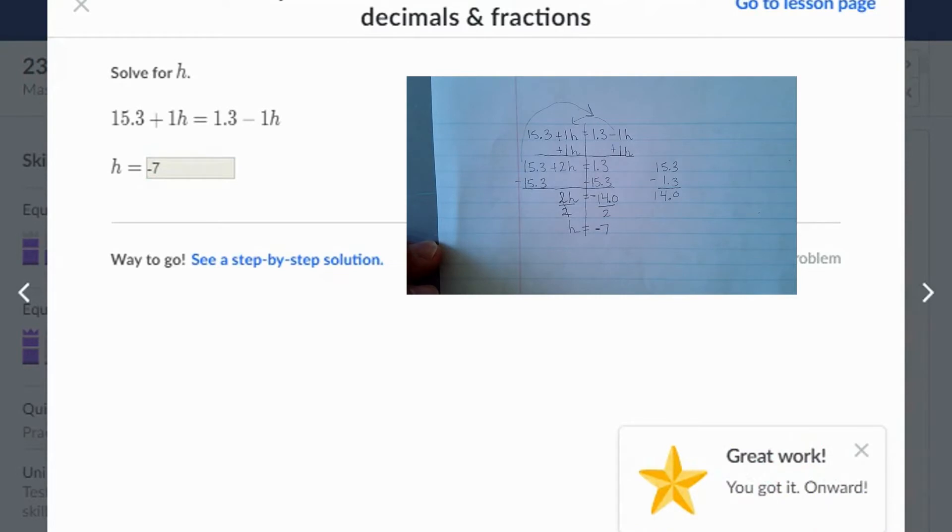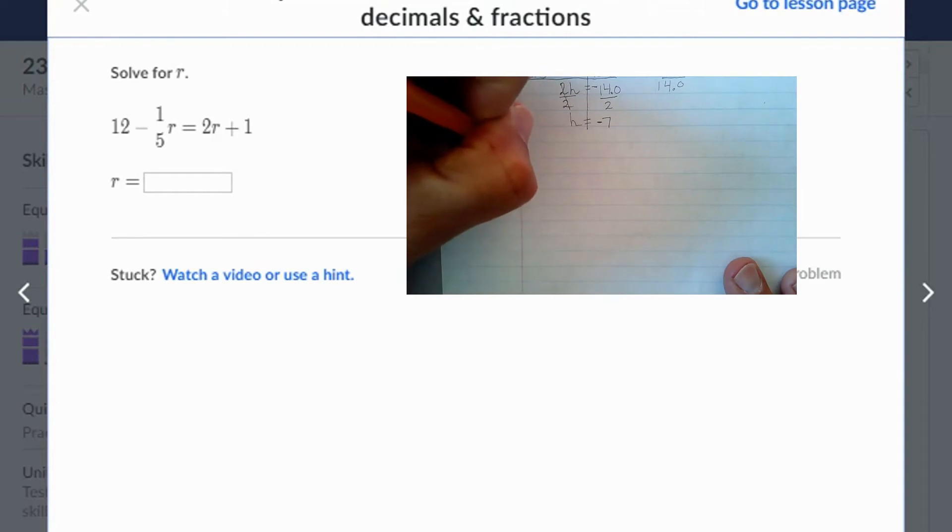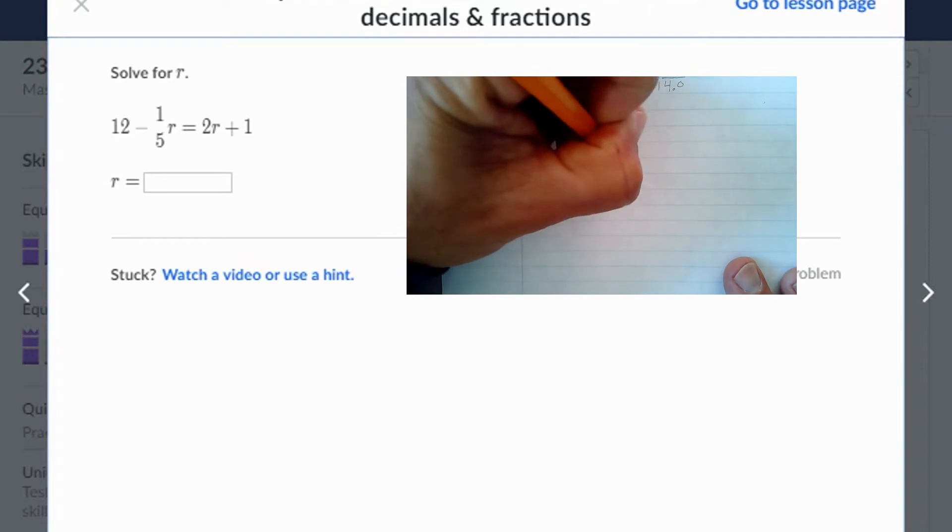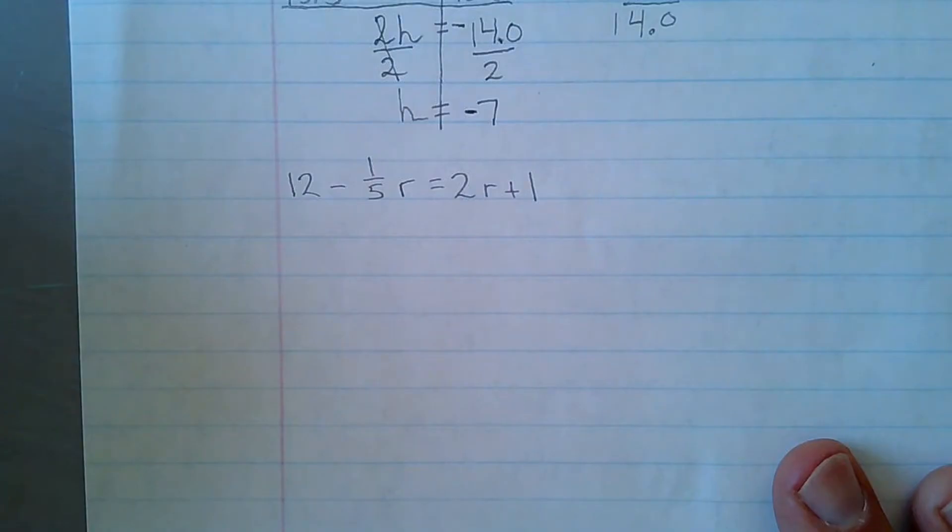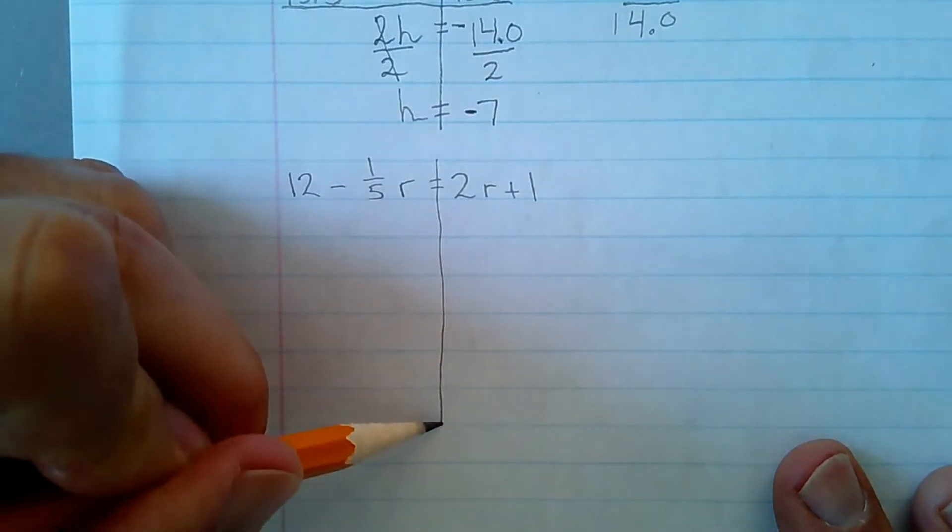Okay. Let's try another. Okay. I'll move this down a little bit, and I have 12 minus 1 fifth times r equals 2r plus 1. Okay. So once again, I have this line here,